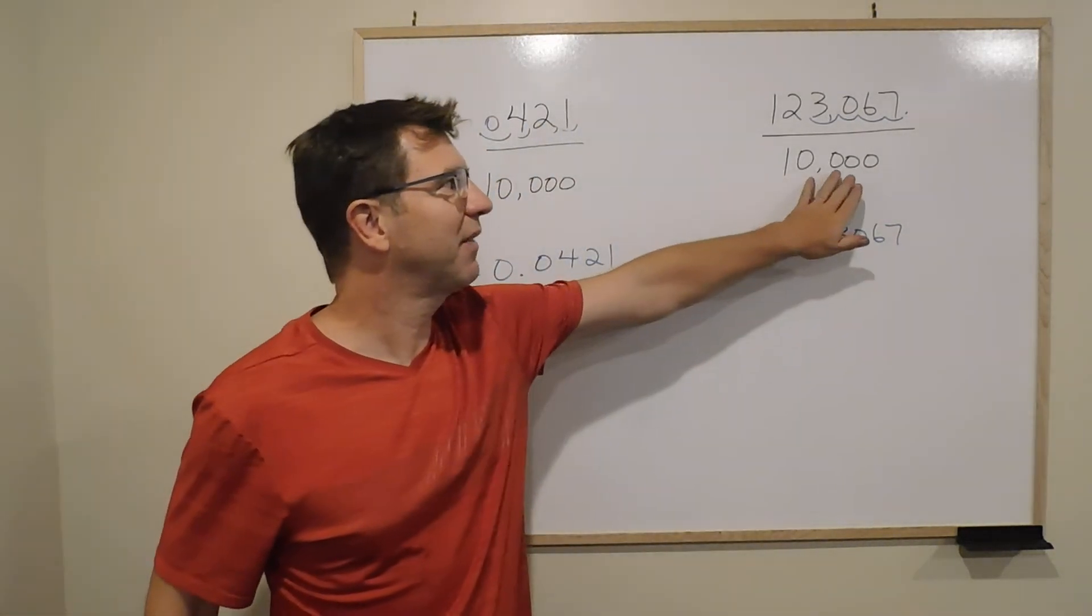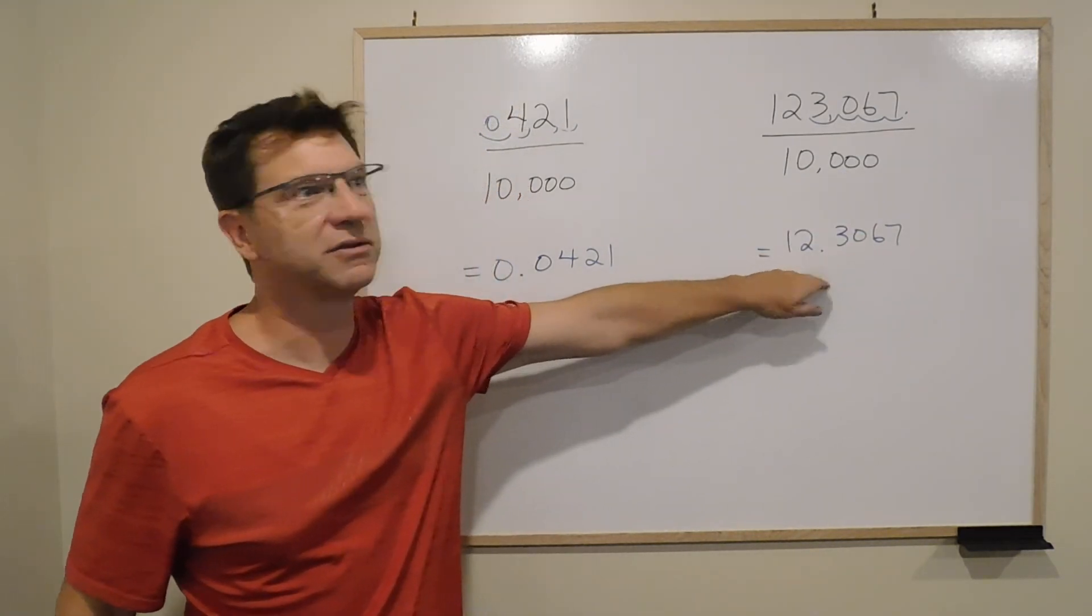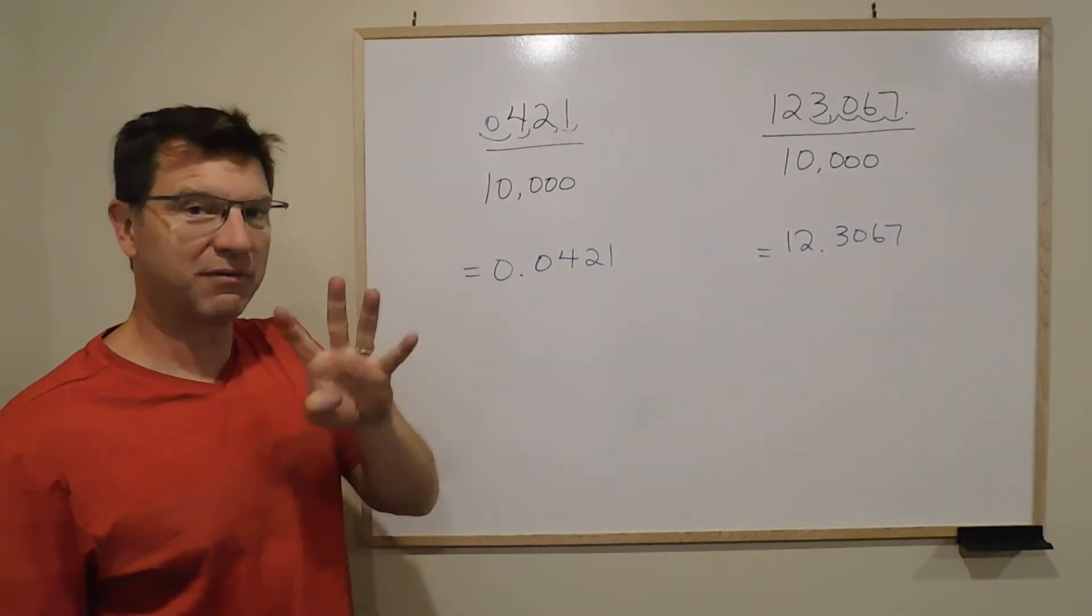Because dividing by 10,000 is the same as moving the decimal place to the left by four spots.